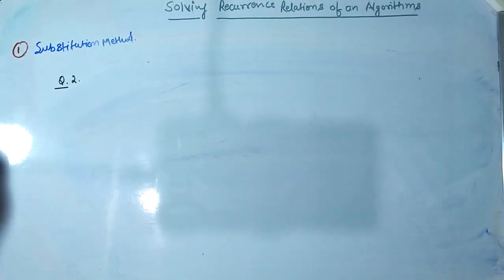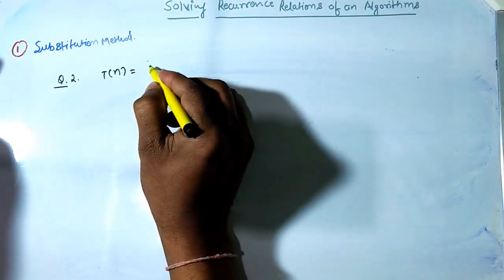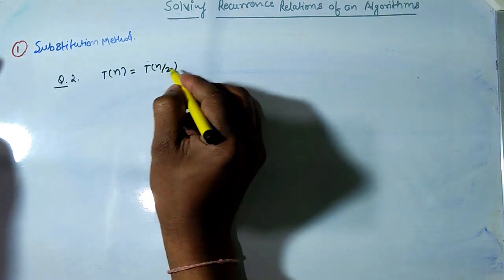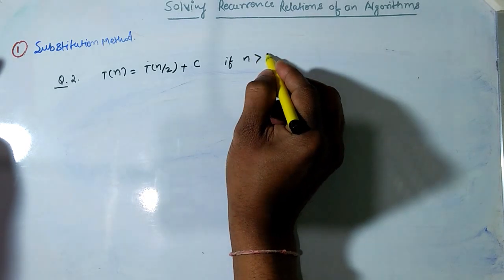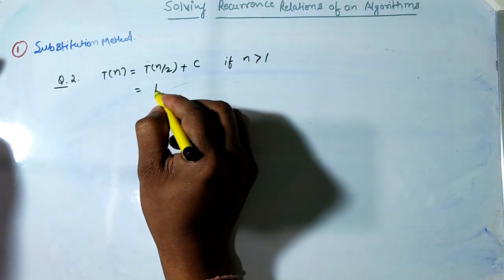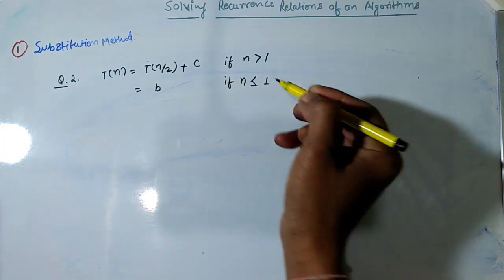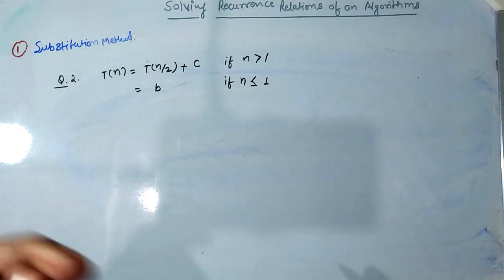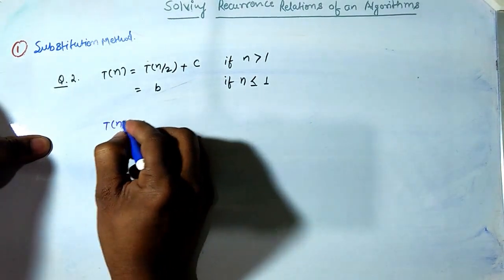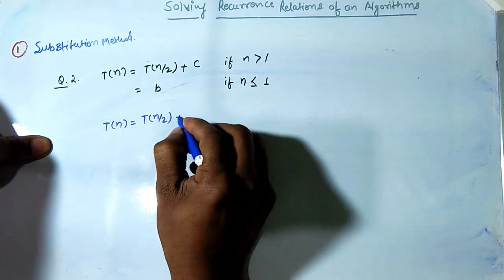Suppose we have T(n) = T(n/2) + c if n is greater than 1, and T(n) = b if n is less than or equal to 1. Let's try to solve this. We write T(n) = T(n/2) + c.